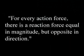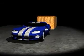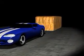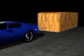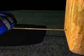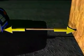Newton's third law states that for every action force, there is a reaction force equal in magnitude but opposite in direction. Using a Dodge Viper attached by a rope to a large block, Newton's third law can be shown. As the Viper accelerates, a force is exerted forward, but the block has an equal force backwards, causing no movement of either object.